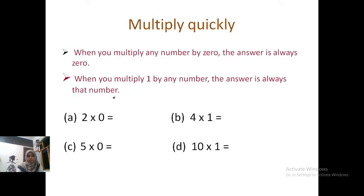Next question. Multiply quickly. Multiply by 0 and 1. When you multiply any number by 0, the answer is always 0. When you multiply 1 by any number, the answer is always that number.